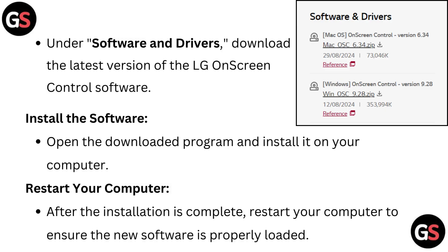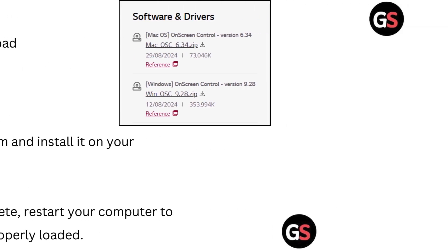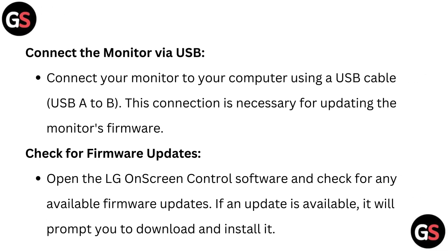Install the software: open the downloaded program and install it on your computer. Restart your computer: after the installation is complete, restart your computer to ensure the new software is properly loaded. Connect the monitor via USB: connect your monitor to your computer using a USB-A to USB-B cable. This connection is necessary for updating the monitor's firmware.